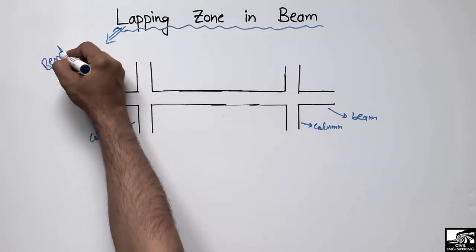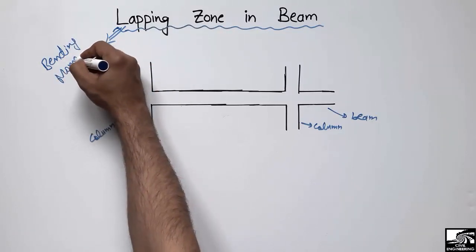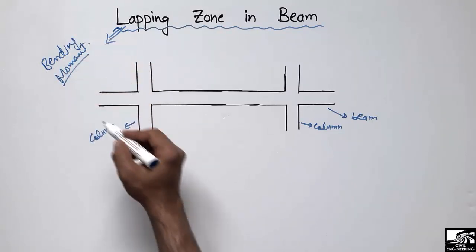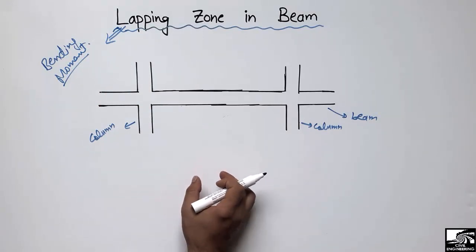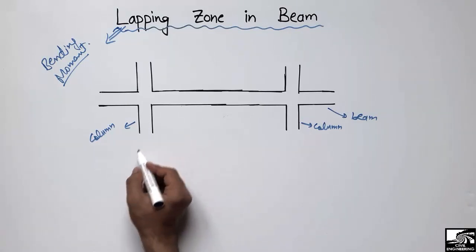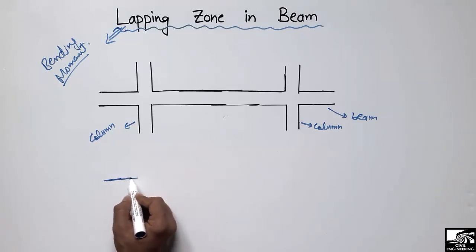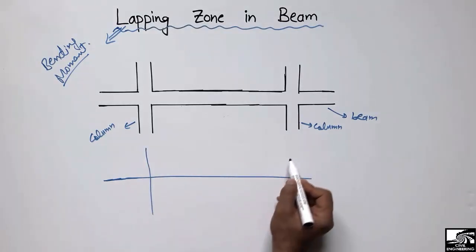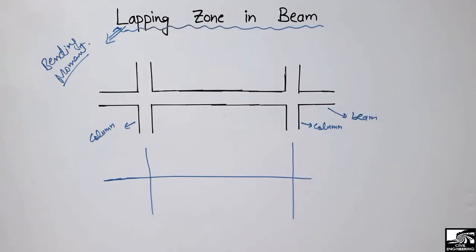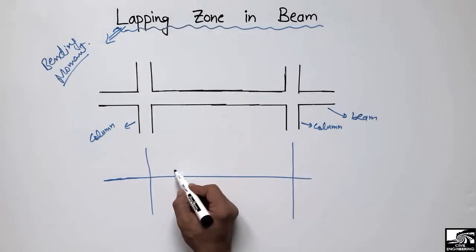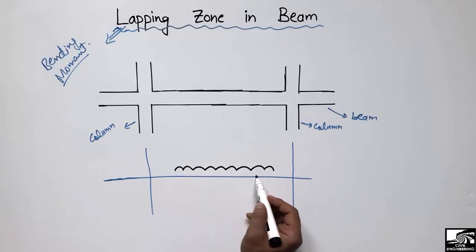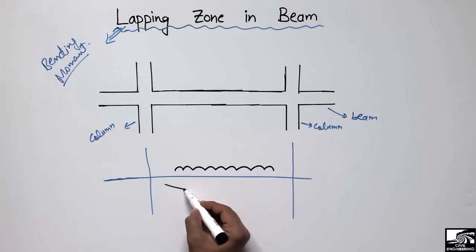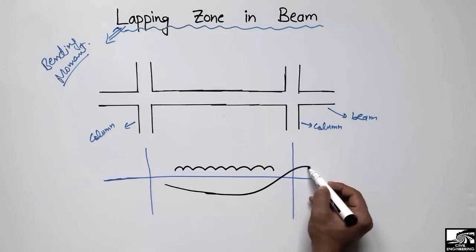Basically, the overlapping of the steel bar or the lapping zone in a beam depends upon the bending moment diagram. Where we have maximum bending moment, we should avoid the overlapping of the steel bars. Let's consider this beam — I want to draw it with a line diagram. This is the same beam with two columns, and let's suppose this beam has been loaded with a uniformly distributed load.